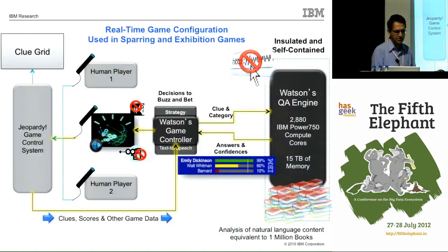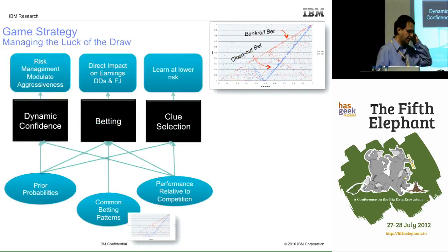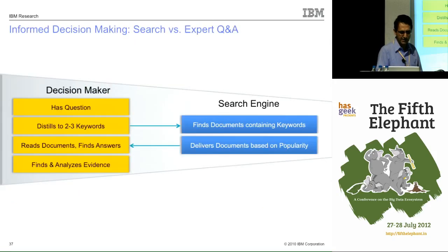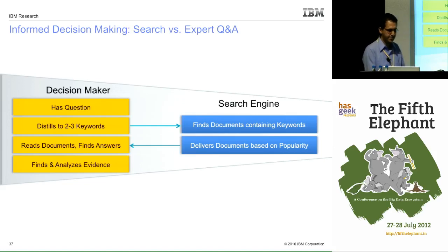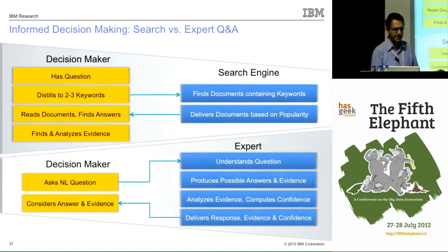There are other parts of the system not discussed much here, including game strategy: when to buzz in, how much to bet, which questions to choose, and when to answer versus pass. Skipping over those, the talk closes with a comparison between Watson and a search engine and some possible applications being worked on.